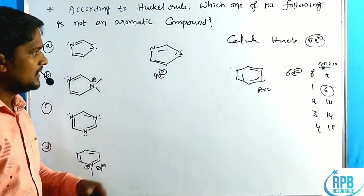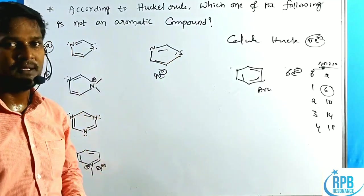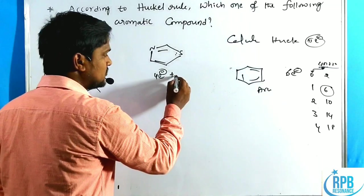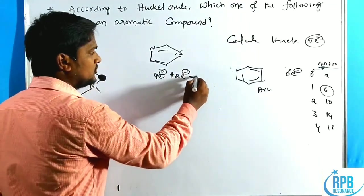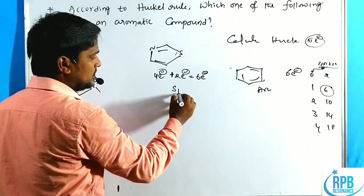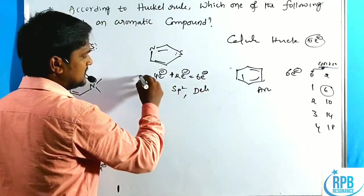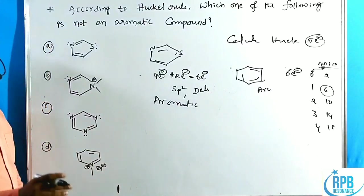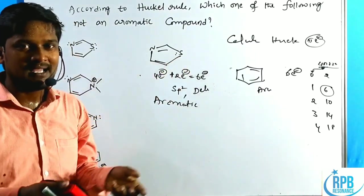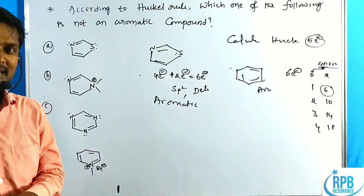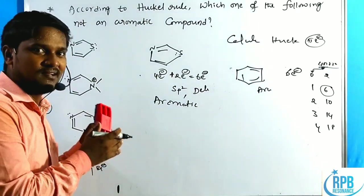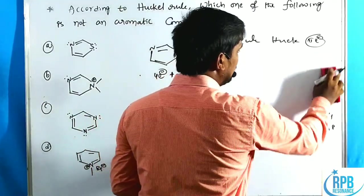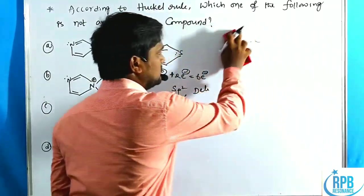In this heterocyclic case, there are two pi bonds giving four electrons. However, the heteroatom has a lone pair of electrons, and lone pairs can also participate in delocalization. So those two lone pair electrons are also counted, giving a total of six electrons. All atoms are sp2 and the system is delocalized, so it is aromatic. However, in heteroaromatic compounds, the lone pair is sometimes considered and sometimes ignored.